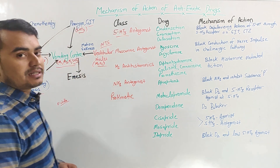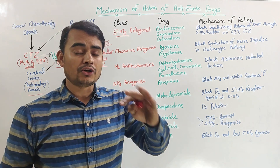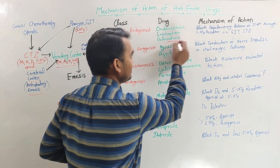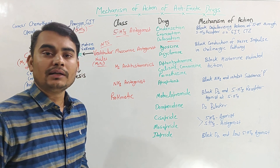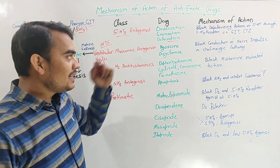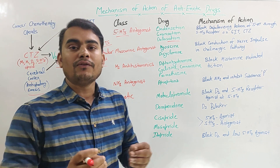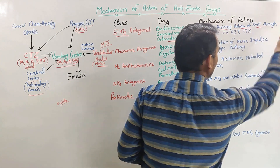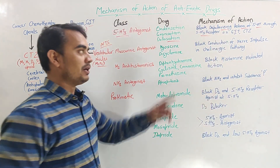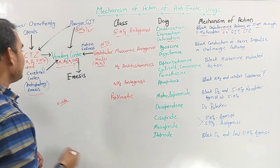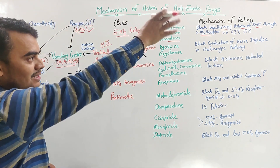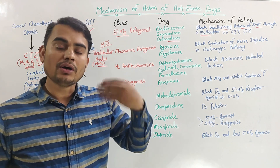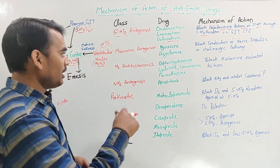Examples of 5-HT3 antagonists include ondansetron, granisetron, tropisetron, ramosetron, and dolasetron — all the '-setron' drugs fall under 5-HT3 antagonists. These drugs block the depolarizing action of 5-HT3 and inhibit the 5-HT3 receptor located in the GIT and the CTZ, acting as antiemetic drugs.